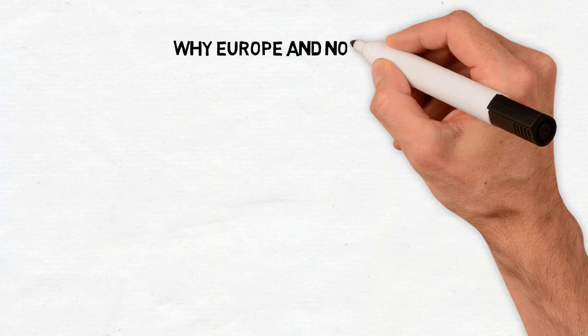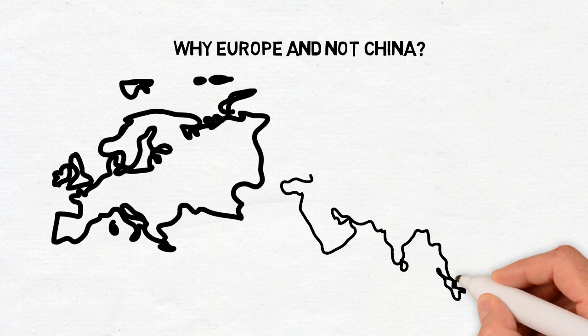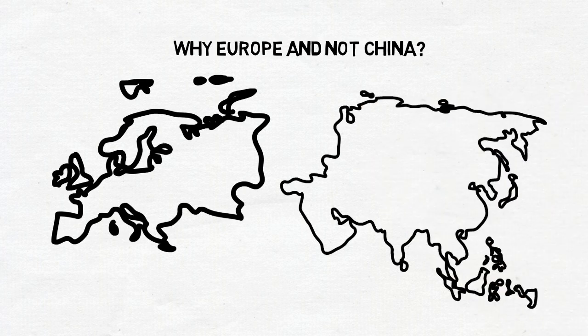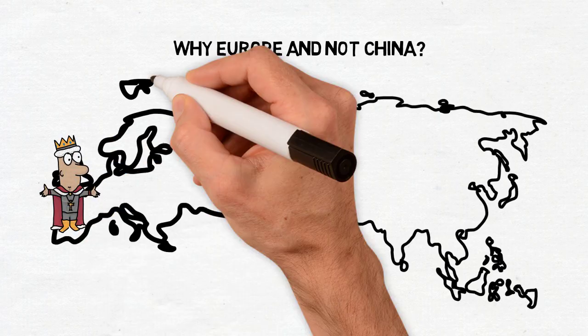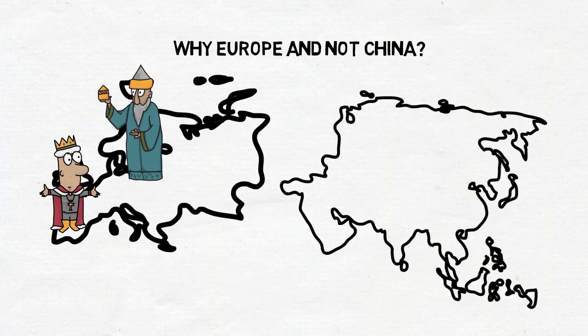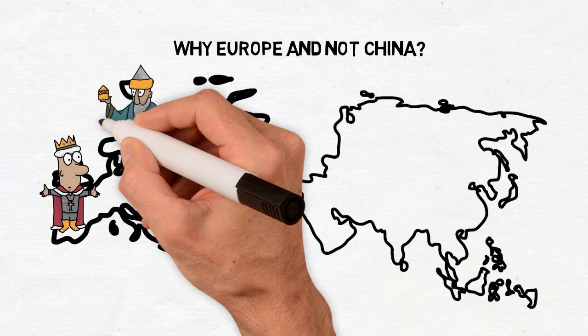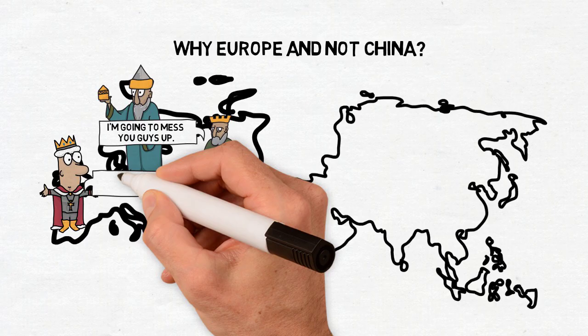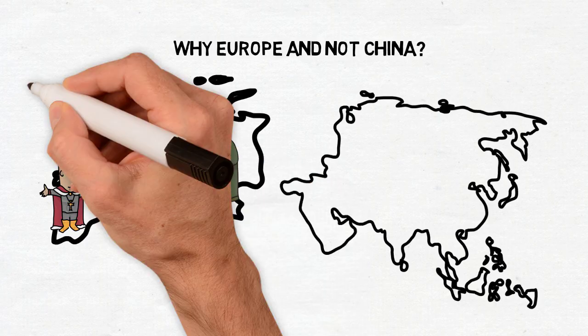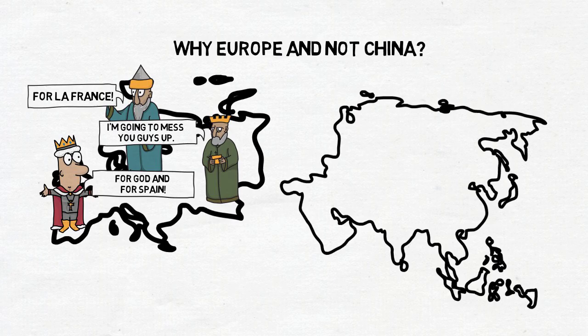Some might ask why it was the European powers rather than the Asian powers of Eurasia who dominated the world. After all, China has historically been one of the most powerful and stable places in the world. Diamond proposes that there are geographical explanations. In Europe, there are lots of natural barriers like mountains, rivers, the sea, etc., which allowed societies to develop independently of each other. At the same time, competition between these societies were massive, and ensured that those who didn't develop quickly would soon be conquered. In other words, it was a sort of natural selection of societies. Only the most economically and militarily advanced societies survived.